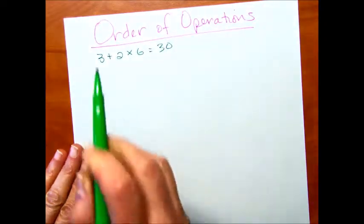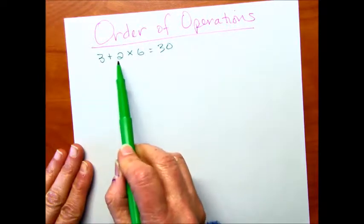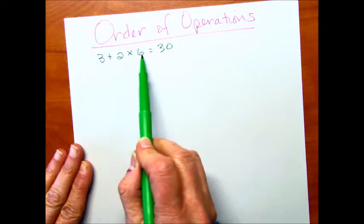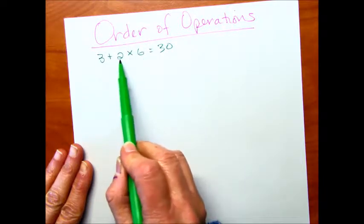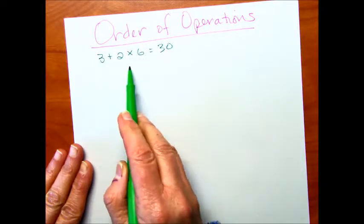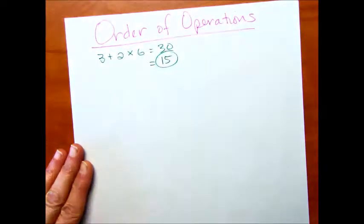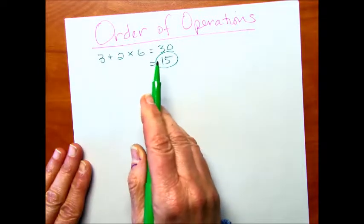But in reality, we're going to follow order of operations, which we'll talk about specifically here. But really you would do multiplication before addition. So 2 times 6 is 12, and then 3 plus 12 would be 15. So really 15 would be the correct answer and not 30.